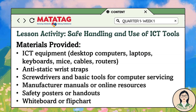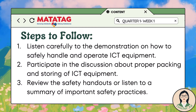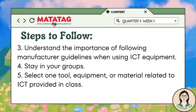Lesson activity: refer to worksheet activity number 1. Materials needed: various ICT equipment, e.g. desktop computers, laptops, keyboards, mice, cables, routers, antistatic wrist straps, screwdrivers and other basic tools for computer servicing, manufacturer manuals or online resources for reference, safety posters or handouts outlining best practices, whiteboard or flipchart for group discussion. Procedure: 1. Demonstrate how to safely handle and operate ICT equipment. 2. Discuss how to properly pack and store ICT equipment to prevent damage during transport or storage. 3. Distribute safety handouts or provide a brief summary of key best practices for ICT safety. 4. Emphasize the importance of following manufacturer guidelines when handling ICT equipment.